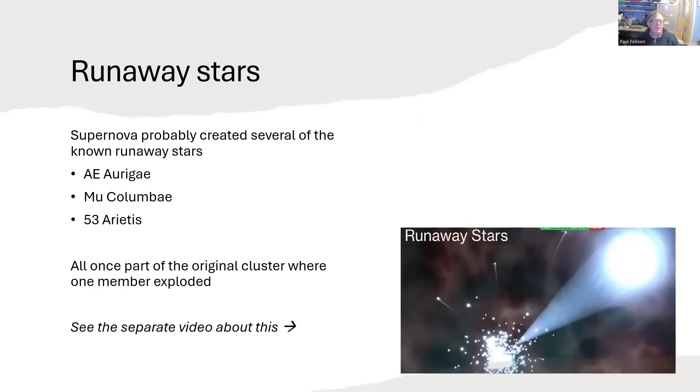And we think that supernova also created a number of runaway stars. And I have a video called Runaway Stars that talks about them. There are three stars in particular, A.E. Auriga, Mu-Columbi and 53 Ariatis.